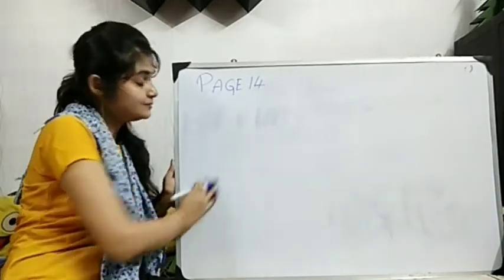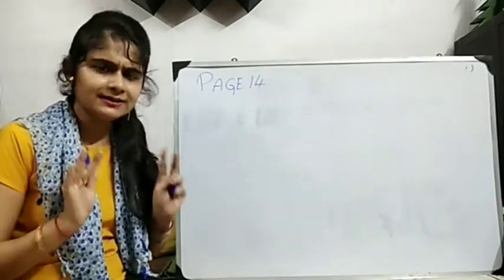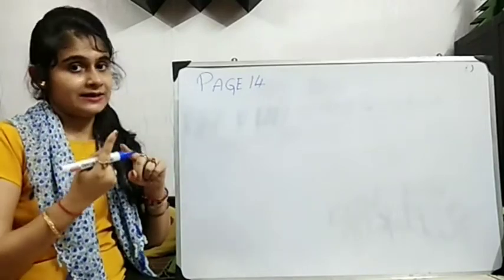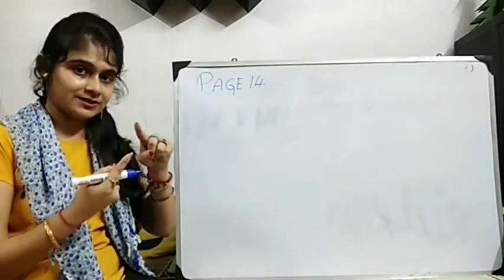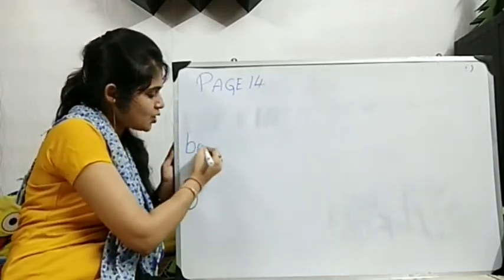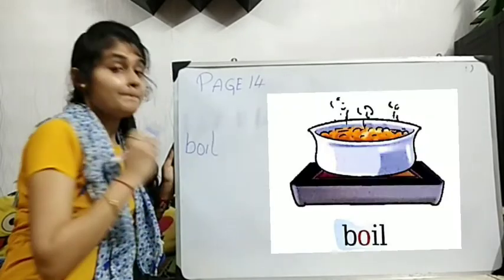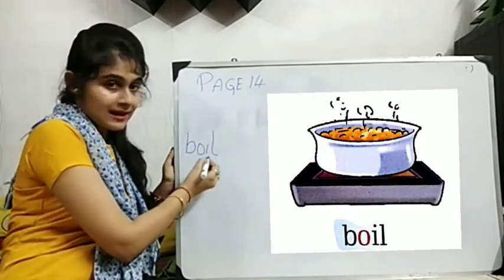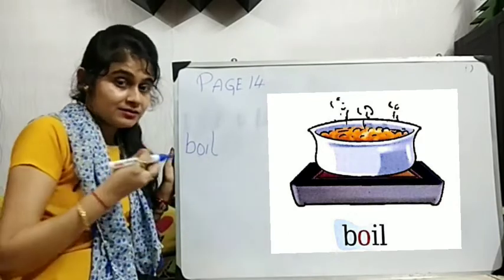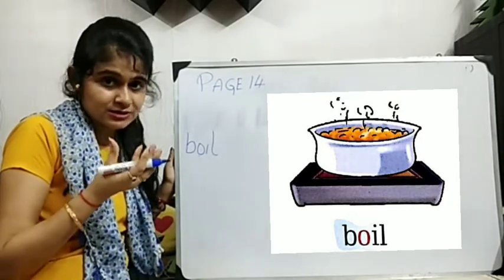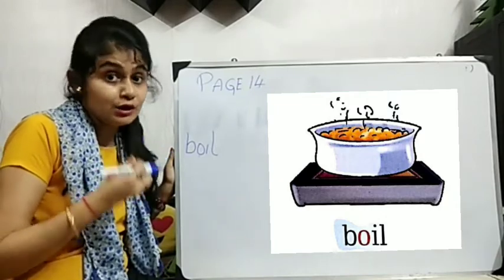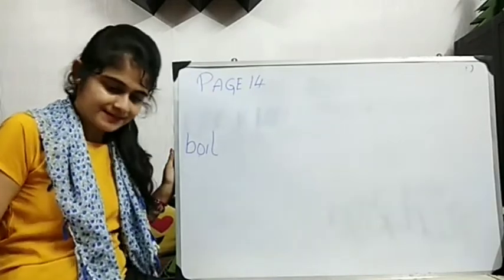Next. Now we will do double O done. Single O done. Now we will do O and I. O and I together. O vowel. I vowel. B-O-I-L. Boil. Boil. B-O-I-L. Boil. Okay? Jol foote na? Dekhi shko toh rannagare maa jol foote hai. Cha foote hai. That is called boil. Okay?